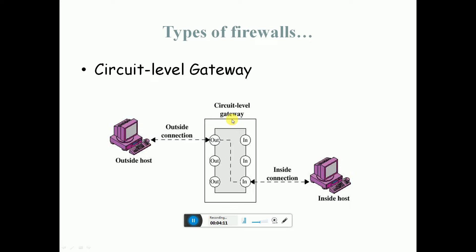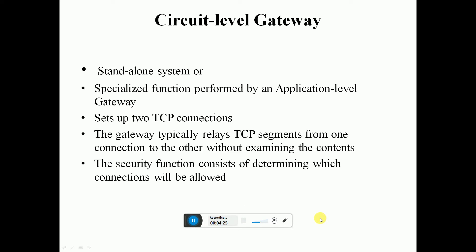The type of firewall — circuit level gateway: the circuit level gateway works with outstanding connections, sitting inside the connection. It can stand alone or perform specialized functions. Unlike the application level gateway, it sets up two TCP connections. The gateway typically relays TCP segments from one connection to the other without examining the content. The security function determines which connections will be allowed.